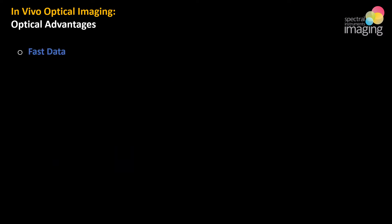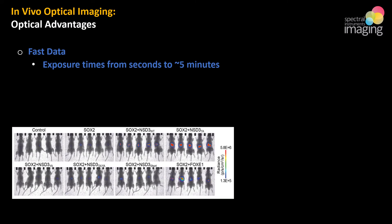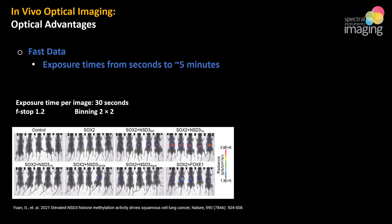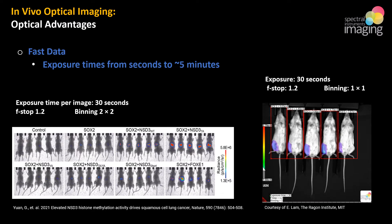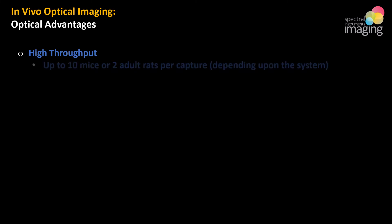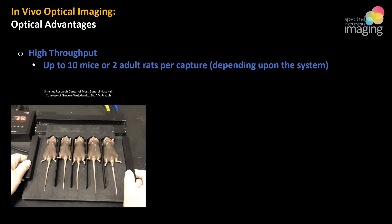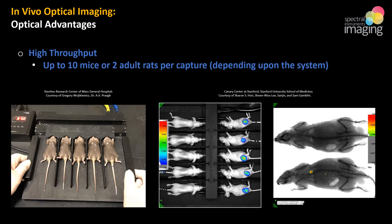The next advantage of optical over other modalities is fast data. Acquisition times from bioluminescence and fluorescence imaging range from half a second up to five minutes, typically between 30 and 60 seconds. Below, a series of acquisitions from a pure capture perspective took only four minutes of exposure total for 40 data points. Here's another acquisition of five mice with five data points using just 30 seconds of exposure time — in clear contrast to other modalities, which can require acquisitions from roughly one to 30 minutes. Another advantage is high model throughput: optical imaging systems can rapidly capture data from five mice, with some able to handle up to ten mice at one time or two adult rats.